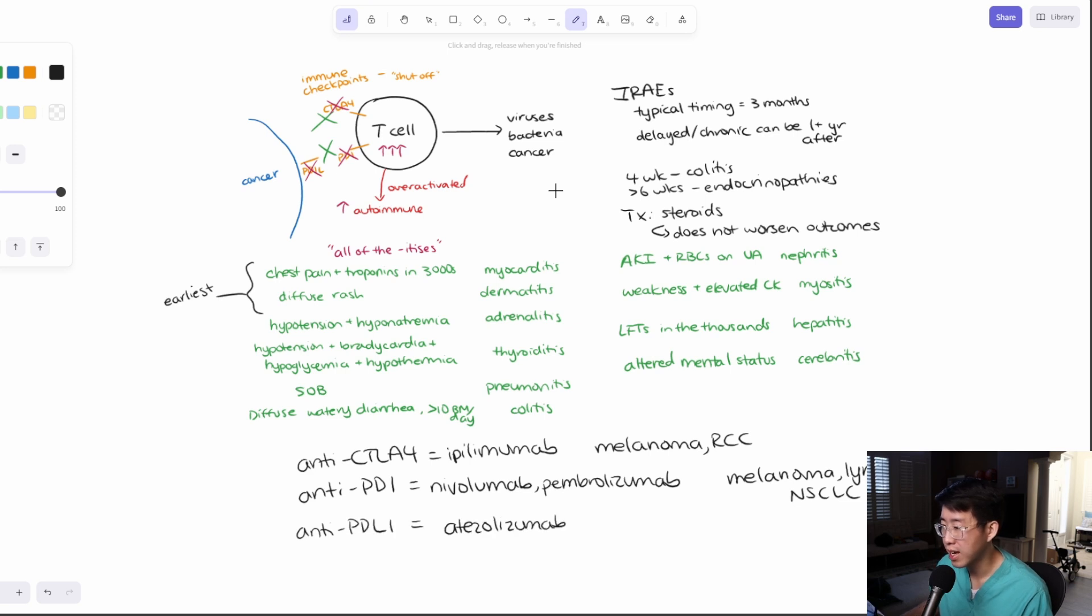And anti-PD-L-1, you have things like atezolizumab and durvalumab. And this one is going to be lung, breast, liver, and some urologic cancers.